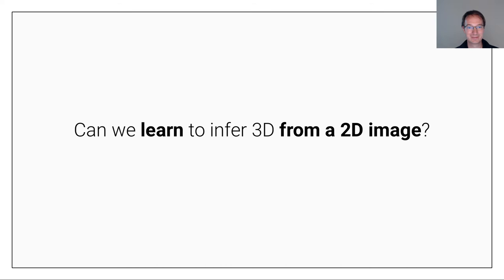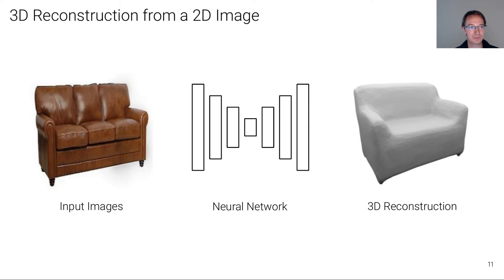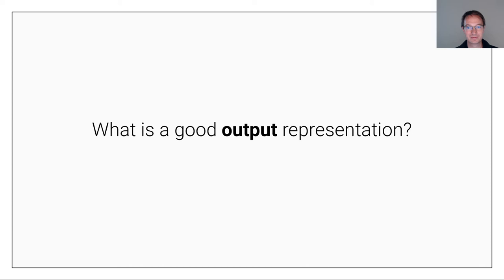This is the setting we will consider throughout most of this talk. The input is a single 2D image, and then there is a neural network that tries to predict a 3D shape representation of the object depicted in that single image. The input representation is pretty clear — it's just a 2D RGB pixel matrix. But the question is, what is a good output representation that can be easily predicted by a deep neural network?